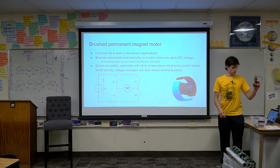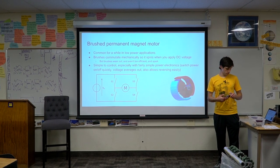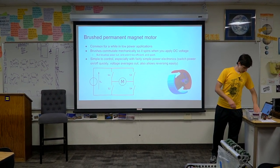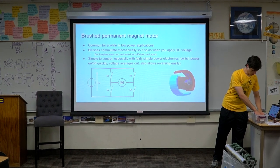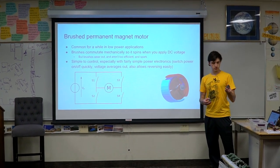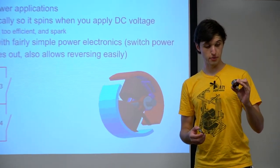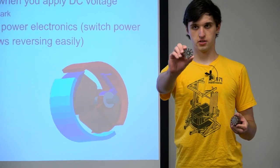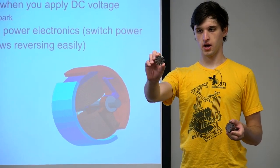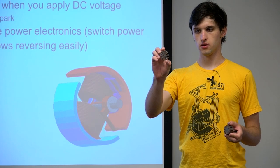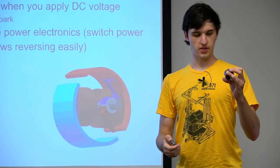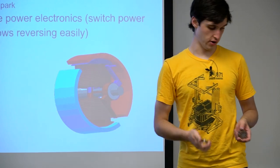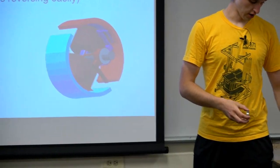Even with three coils the torque produced at various rotational positions is pretty bumpy, so the SIM has a whole bunch of coils. Over here I have cross sections through some rotors — you can see the laminated steel or iron with bunches of wires wrapped through it to make coils at varying rotational positions.